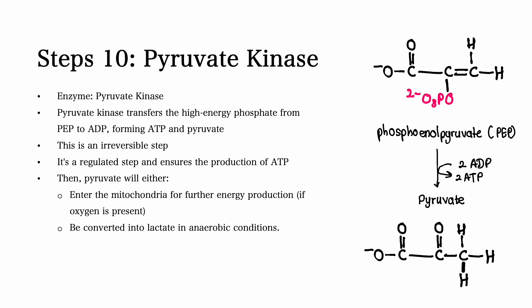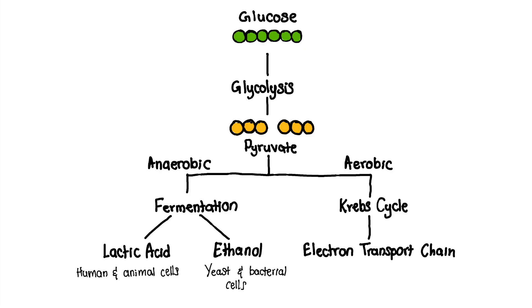Step number 10. This is the last step of glycolysis. In this last step, pyruvate kinase is the main enzyme involved. Pyruvate kinase transfers a high energy phosphate from phosphoenolpyruvate, also called PEP, to ADP. This forms ATP and pyruvate. This is an irreversible and regulated step that ensures the production of ATP. Pyruvate will then either enter the mitochondria for further energy production if oxygen is present, or will be converted to lactate in human and animal cells in anaerobic conditions.